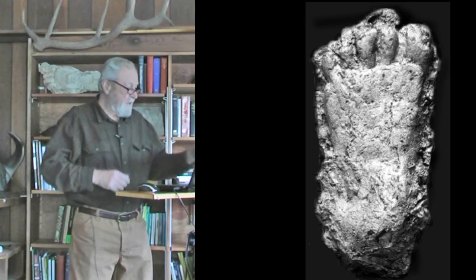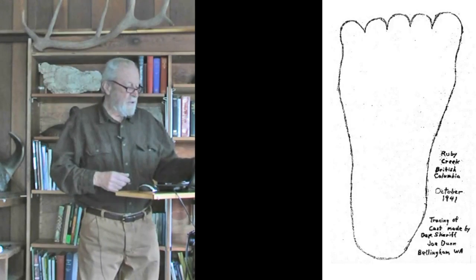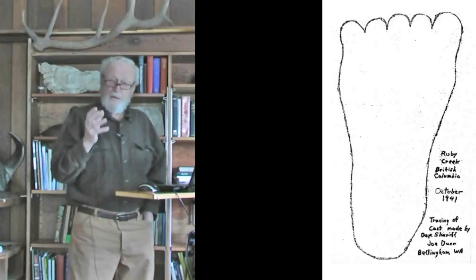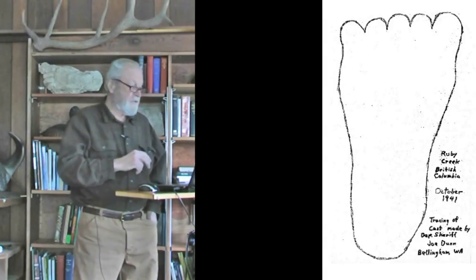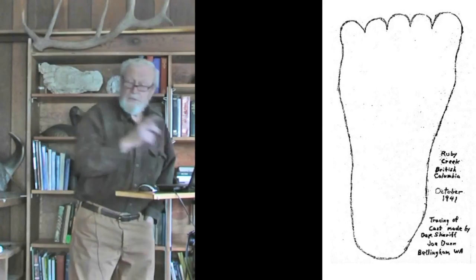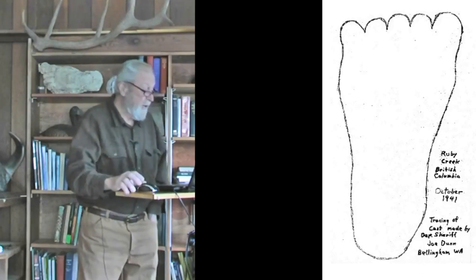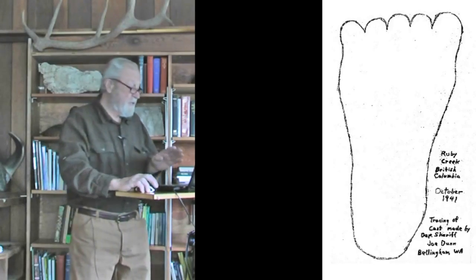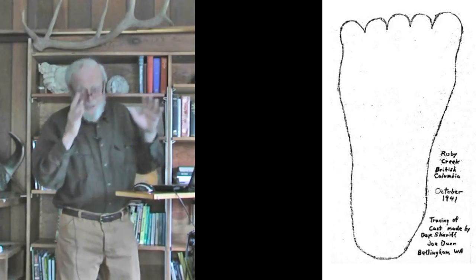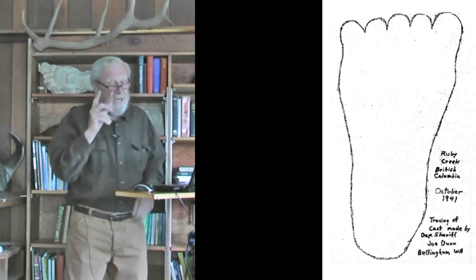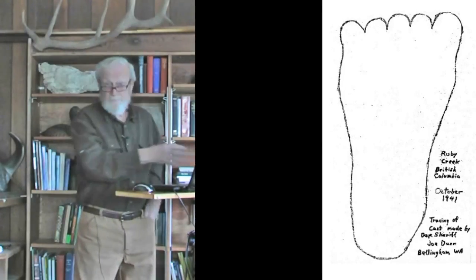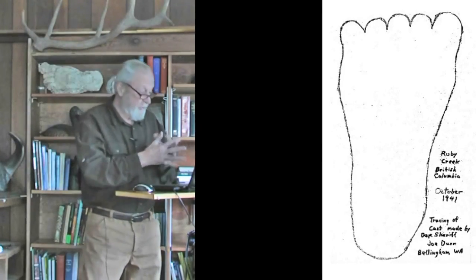What's interesting about that feature is that it occurred in the first Sasquatch track ever cast, as far as we know. Now that original cast has been lost, but a tracing of it survives, and this is the tracing of it here, loaned to me by John Green. That was cast by a Washington State Deputy Sheriff who came up to BC and cast a Sasquatch track in 1941. So this is our oldest track cast or track cast tracing.